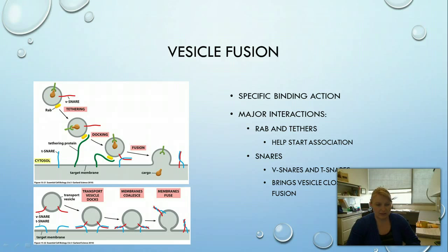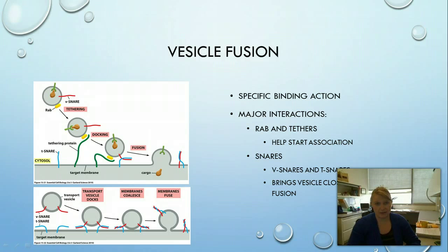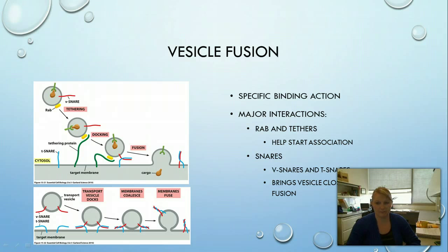It's important to understand both budding and fusion as part of a cycle. The pits with specific receptors bud off; dynamin cuts the vesicle from the membrane; the adaptins and coat come off; and then the vesicle is free to move where it needs to go. It then reaches the target, where the Rab and tethering proteins bring it closer until the V-SNAREs and T-SNAREs attach and pull it close enough for fusion to occur.